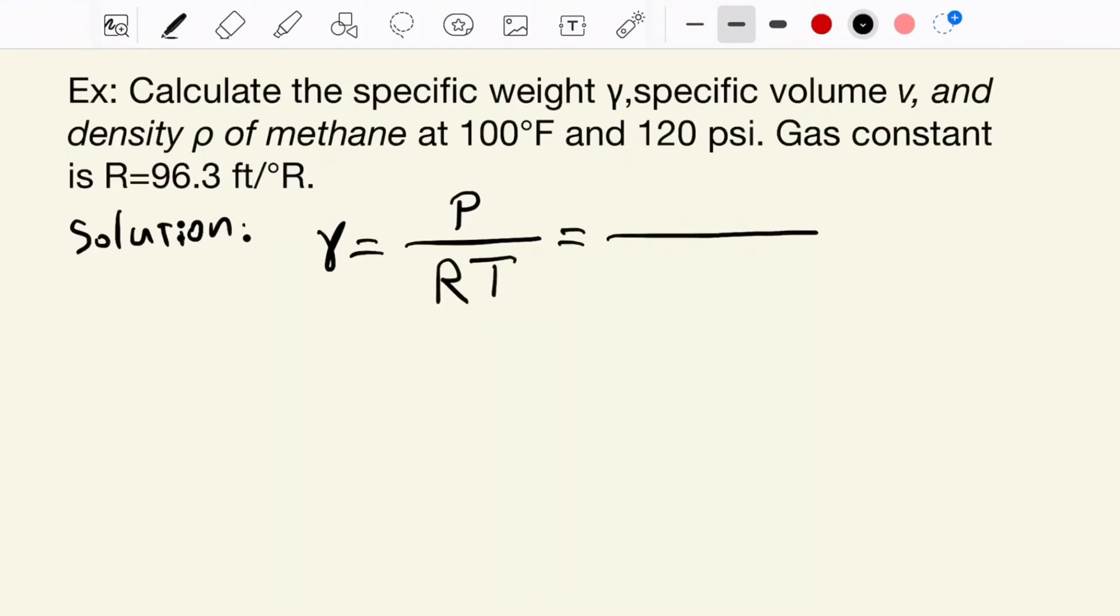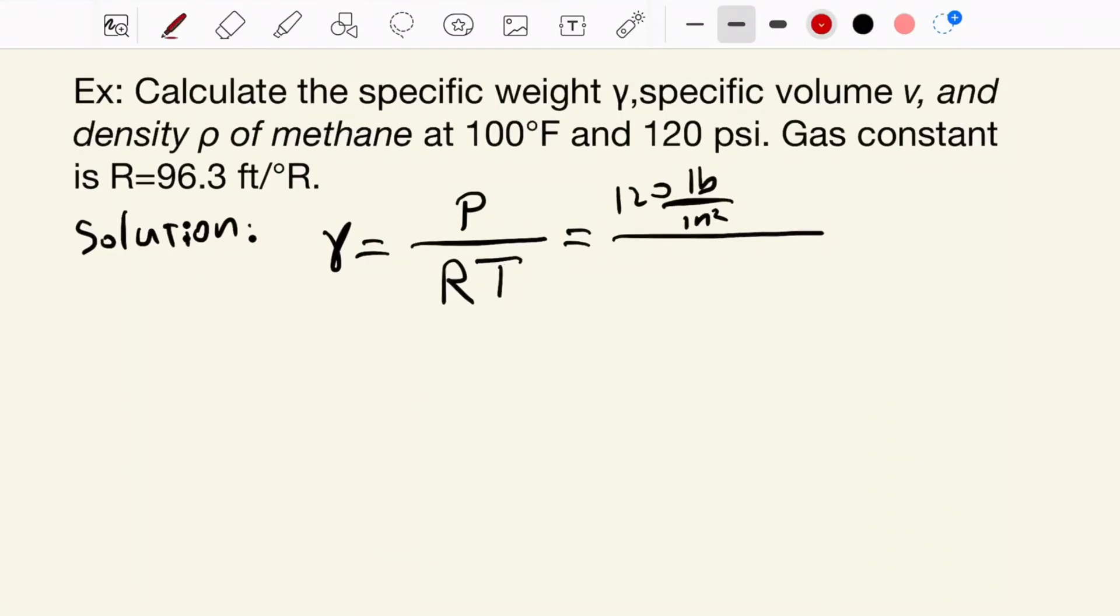Pressure equals 120 pounds per inch square. Now, I want to change this pound per inch square to pound per foot square. How we can do it? Just from here, I add foot square. And foot square equals 144 inch square. Good.